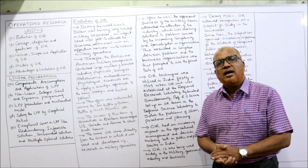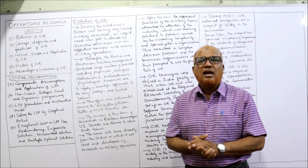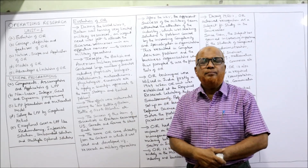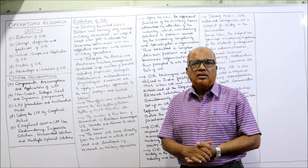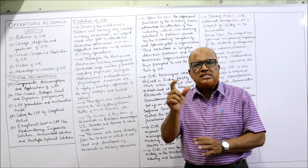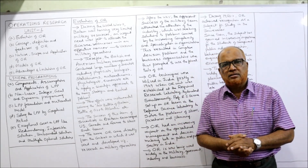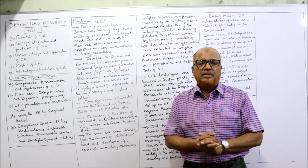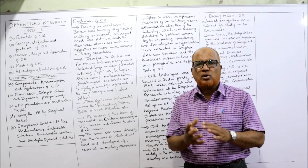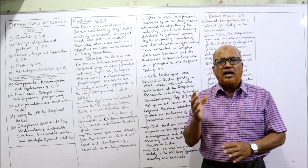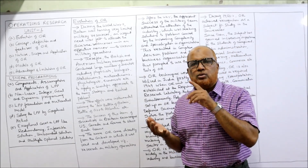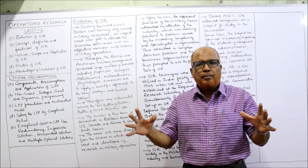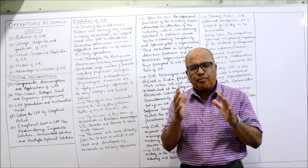Unit number four covers network analysis — what is a network, graphical presentation of a complex project, how to finish the project within limited time and limited resources, how to crash activities, and the estimated time to complete a project. The last unit, unit five, consists of waiting line problems and competitive situation problems. In unit five I am going to explain queuing theory, game theory, and simulation. These are the complete topics of operational research I am going to cover.